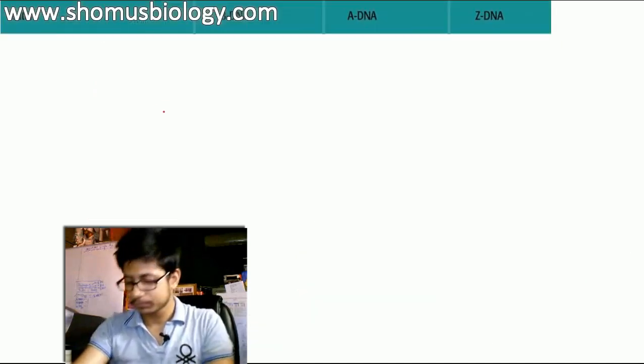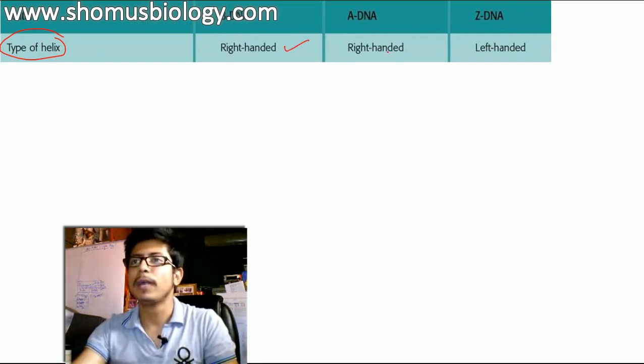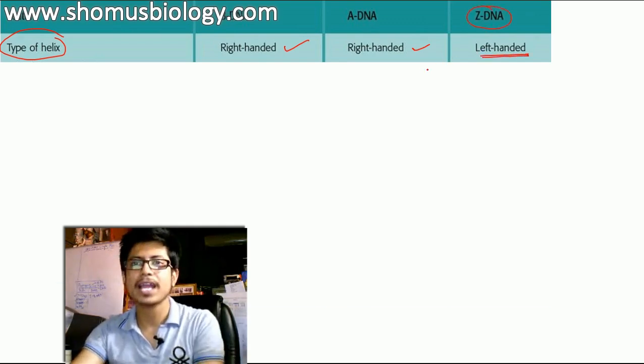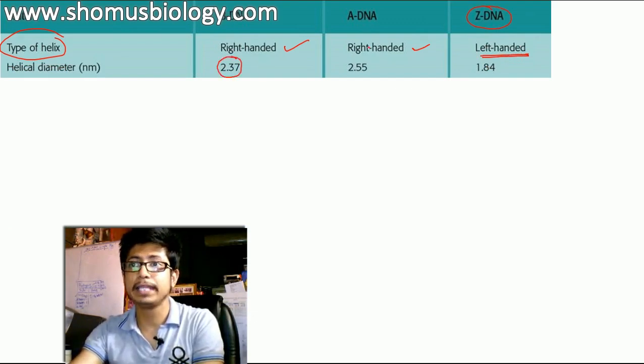If you go here, let us say the type of helix, B DNA is right-handed helix, while A DNA is also right-handed, but Z DNA is a left-handed helix. Second thing, helix diameter for the B DNA is 2.37, for the A DNA 2.55, Z DNA 1.84.